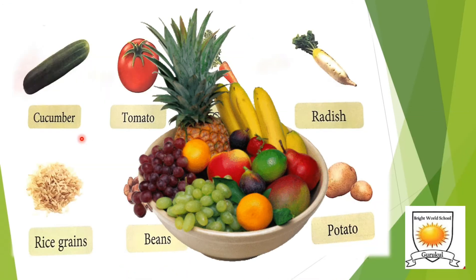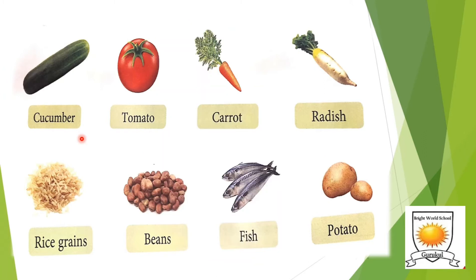Most fruits are eaten raw, but only a few vegetables such as cucumber, tomato, cabbage, carrot, and radish are usually eaten raw. The food that must be cooked before eating includes grains, pulses, beans, fish, meat, and vegetables such as potato, cauliflower, and so on.